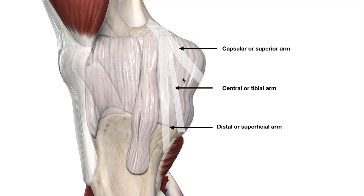The posterior oblique ligament has three arms, all originating from the adductor tubercle and inserting over the tibia. The first is the capsular arm, or superior arm, which inserts at the posterior capsule. The second is the central arm, or tibial arm, which inserts over the posterior aspect of the tibia just distal to the joint line. The third is the distal or superficial arm, which inserts over the tibia at the insertion of the distal arm of the semimembranosus muscle and at the sheath of the semimembranosus tendon.